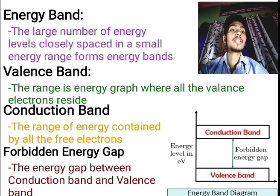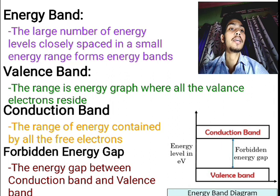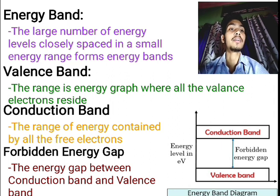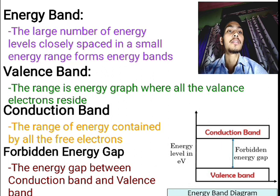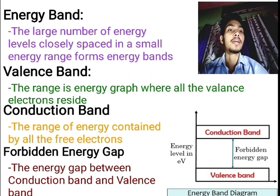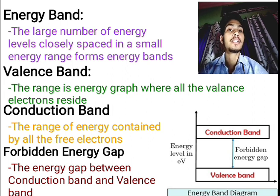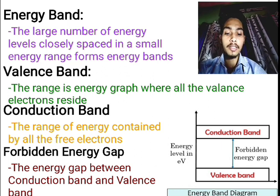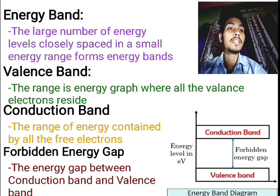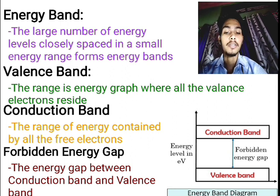Looking at the diagram with energy level along the y-axis, you will see that the conduction band is above the valence band, meaning the conduction band has higher energy. There is a gap between them called the forbidden energy gap. The forbidden energy gap is defined as the energy gap between the conduction band and the valence band. This is very important.